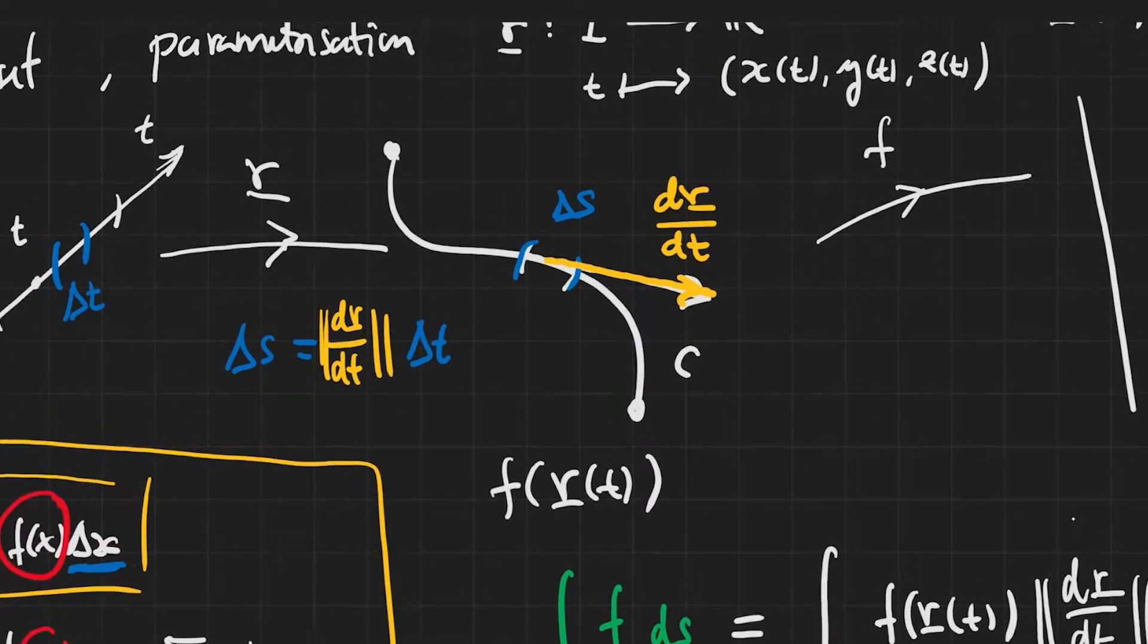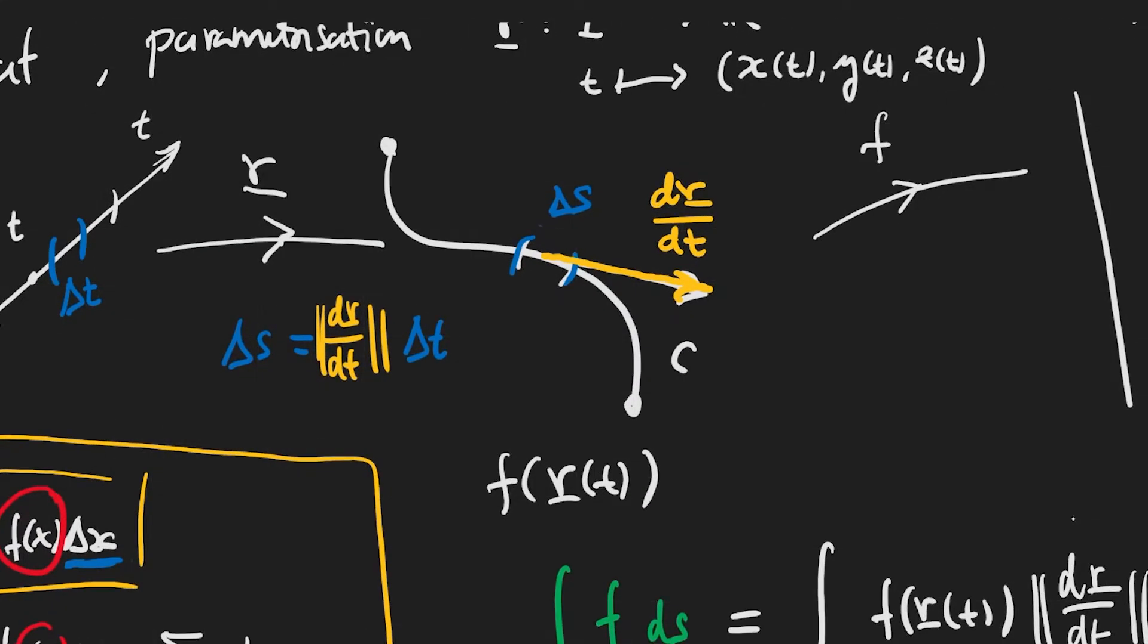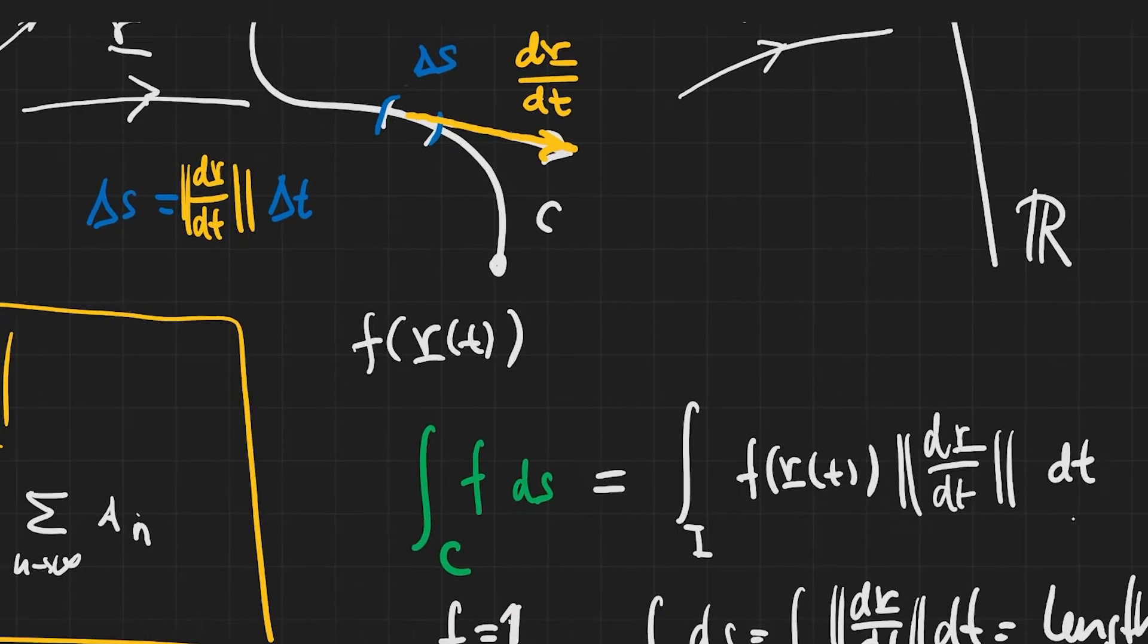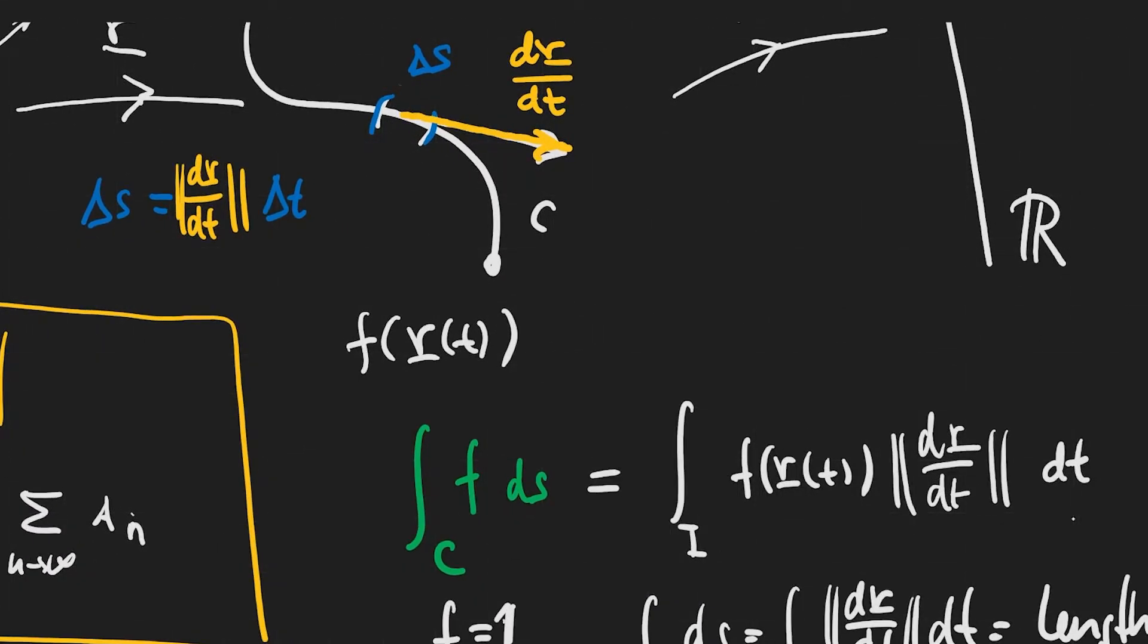Now, as the picture is indicating, that is the factor that converts the length of an interval in the parameter axis to the length of a segment of the curve, so a bit of arc length. So the norm of this vector, the length of this vector, is that proportionality factor. And so that's how we get that formula.